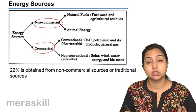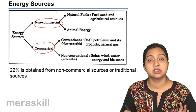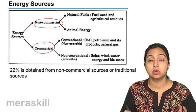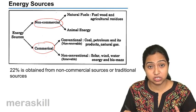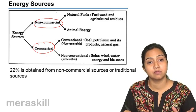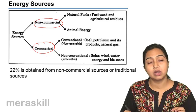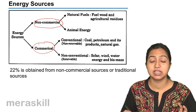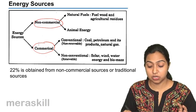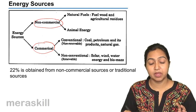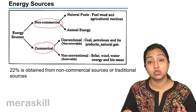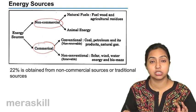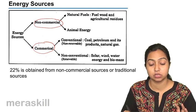Besides that 22%, 70% of our population lives in rural areas. They either don't have access to commercial energy or they cannot afford it. So on an average, we can say nearly 50% of the population cannot afford commercial energy, and out of that 50%, 22% still survive only on non-commercial or traditional sources of energy.